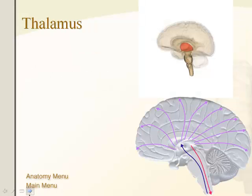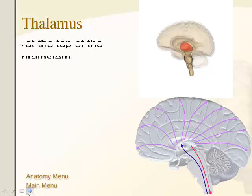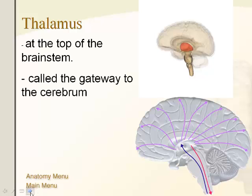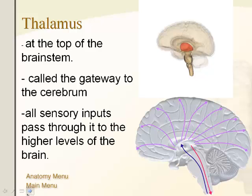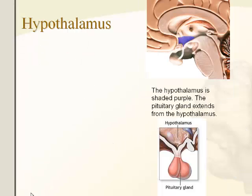The thalamus is the region in the middle, above the brainstem. It acts as a relay hub — everything sensed by the brain comes into this area and is then fed out to peripheral regions of the brain for processing.